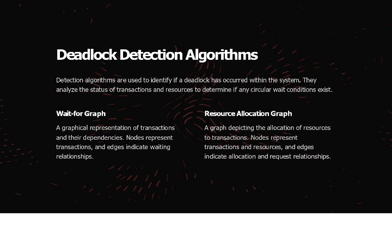Next, we will see about the resource allocation graph. This graph represents the allocation of resources to transactions. Nodes represent both transactions and resources, and edges indicate allocation or request relationships.